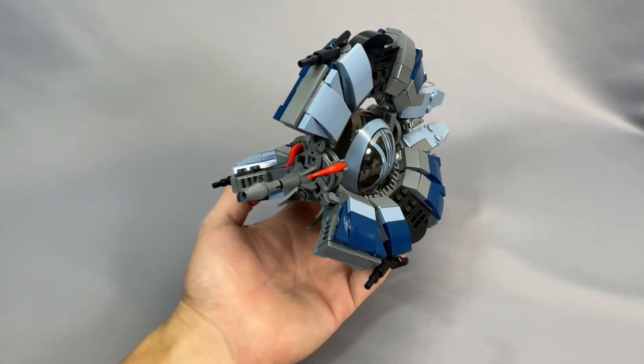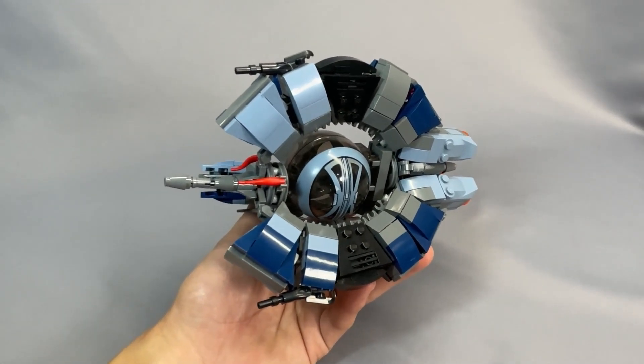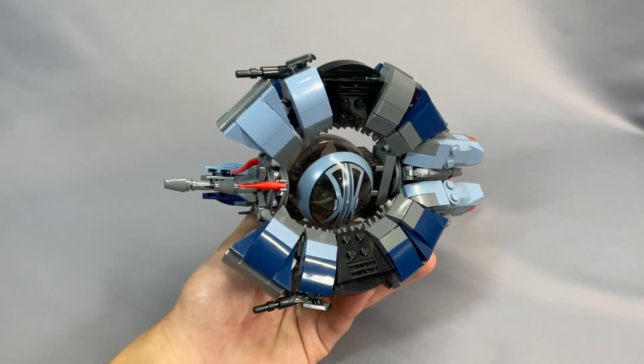Instructions for Grimder's Droid Tri-Fighter costs 5 British pounds, or about $6.18 in mid-June 2023. There will be a link to the instructions in the description below.